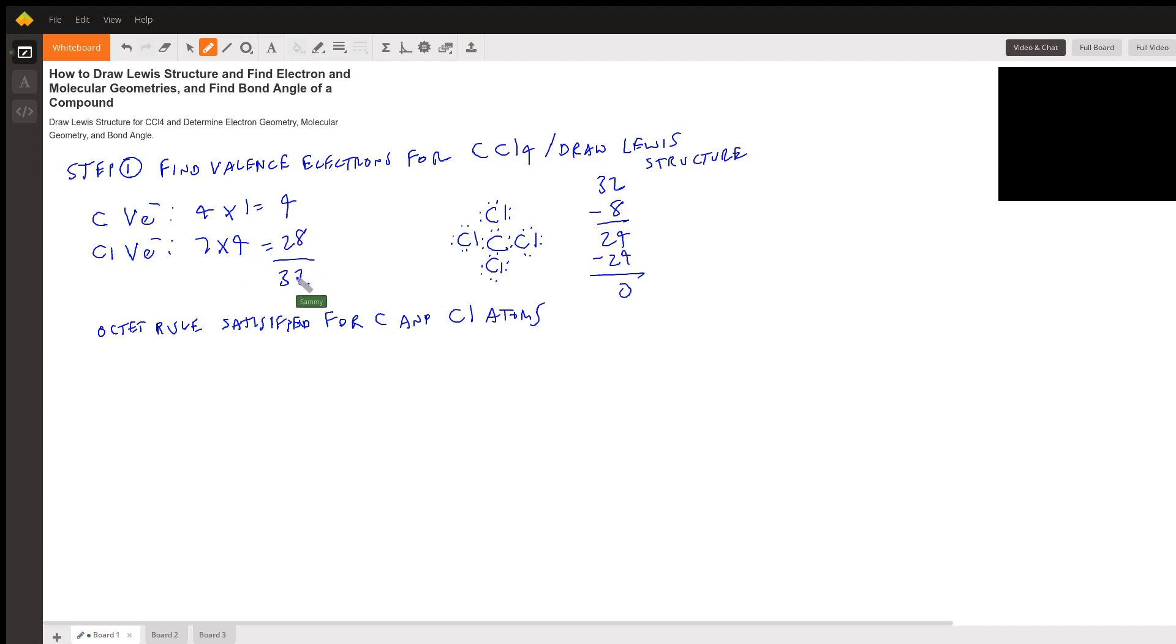We add these two together, we get a total of 32 valence electrons. Now the carbon is the least electronegative element in the compound, and that will go in the center. So carbon will go in the center, and then it'll be surrounded by the four chlorines.